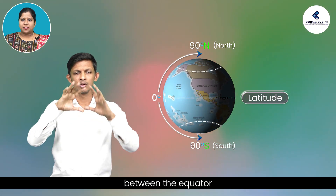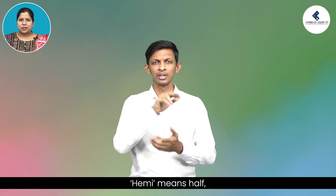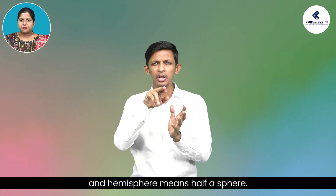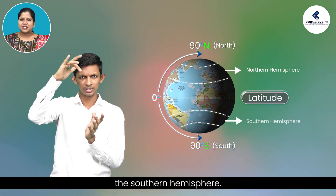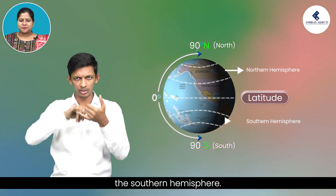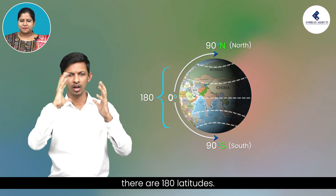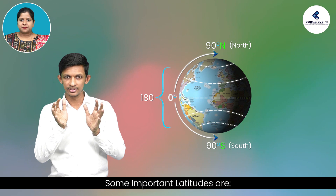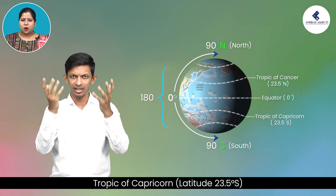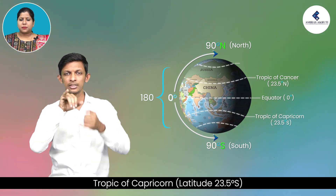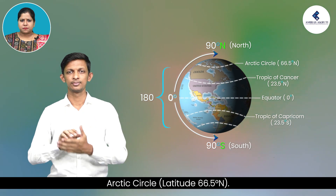That half of Earth between the equator and the north pole is called the northern hemisphere. 'Hemi' means half and hemisphere means half a sphere. The half between the equator and the south pole is called the southern hemisphere. Counting from one pole to the other, there are 180 latitudes. Some important latitudes are the equator, Tropic of Cancer, Tropic of Capricorn, Arctic Circle and Antarctic Circle.